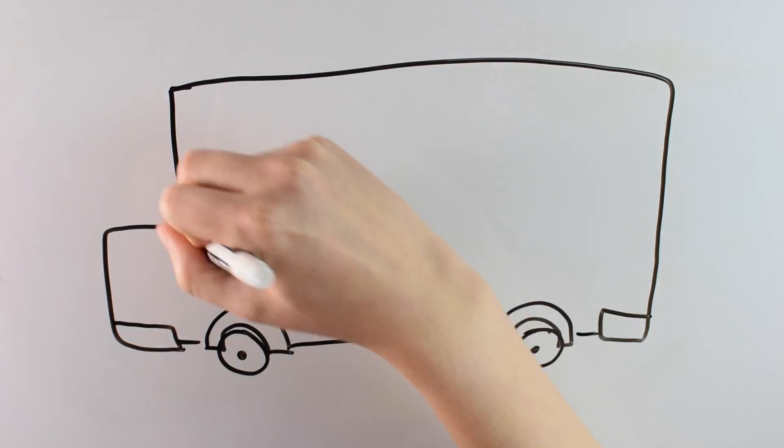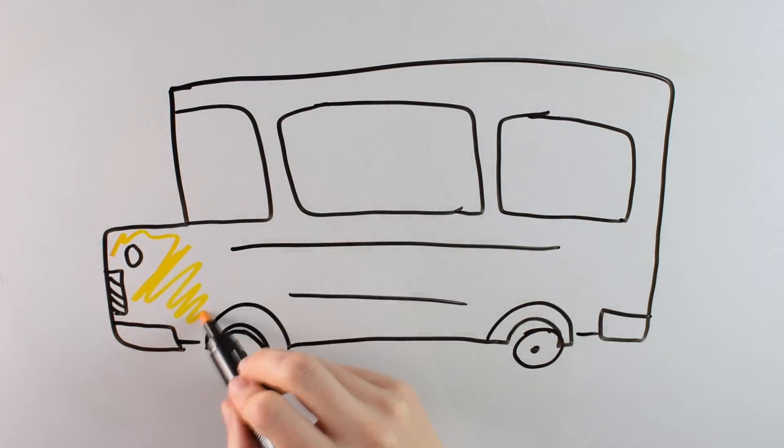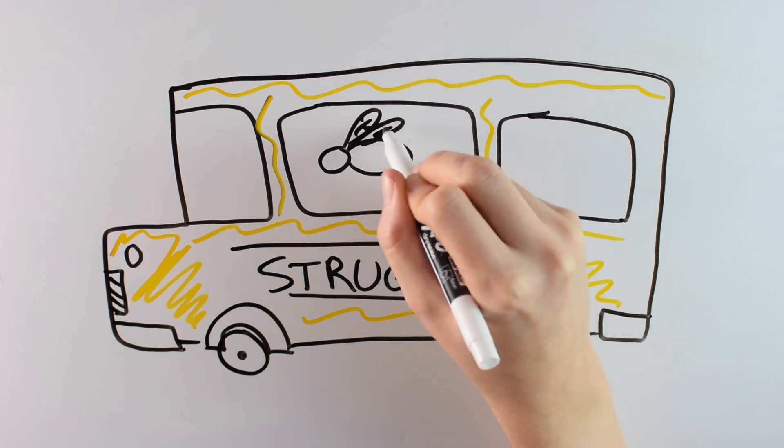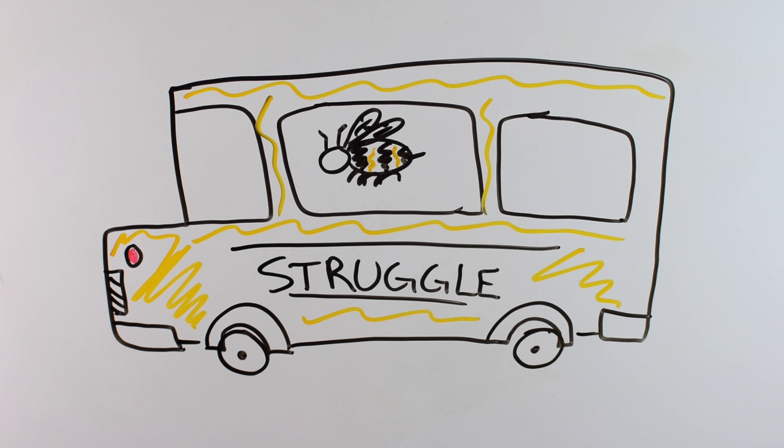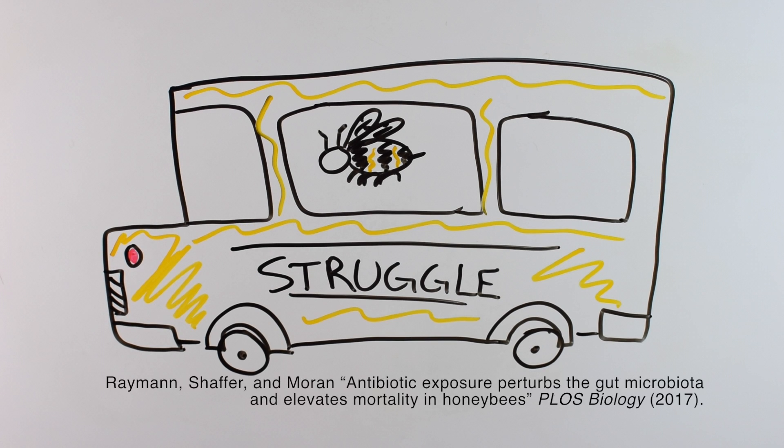There are a huge number of known and unknown factors making bees ride the struggle bus. But researchers from the University of Texas recently published a paper highlighting just one more way bees are getting the short stick, and it has to do with antibiotics.